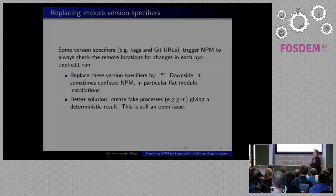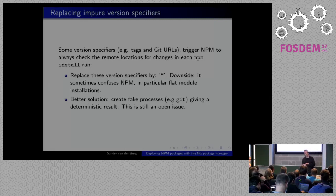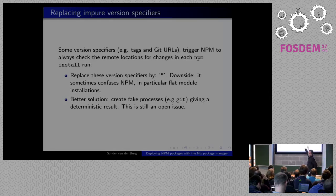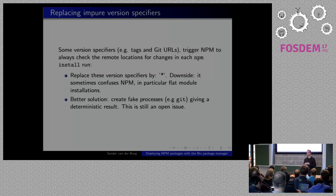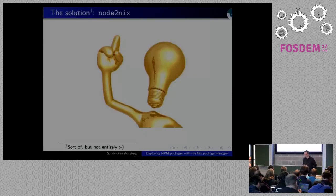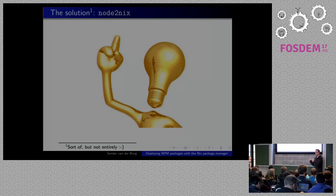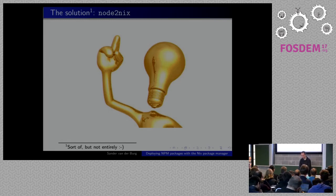There's also the issue that if you use Git URLs in your package, NPM will always try to remotely connect to the repository to see what version it resolves to on each install run. To bypass that, currently the version number is replaced with a star, though that's not ideal since NPM sometimes gets confused. A better solution would be to fake the Git process to always give a deterministic result, but that's still a work in progress. Taking all these lessons into account and building a tool — which was actually done — you can use Nix to deploy node packages.